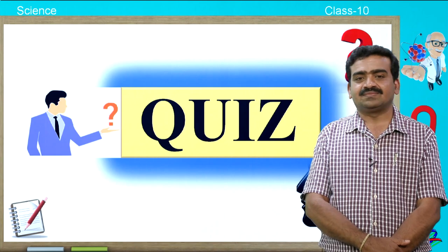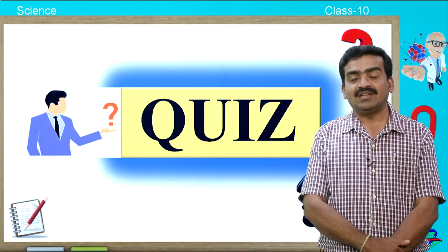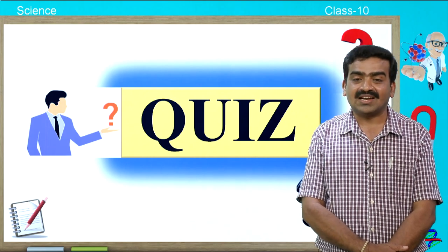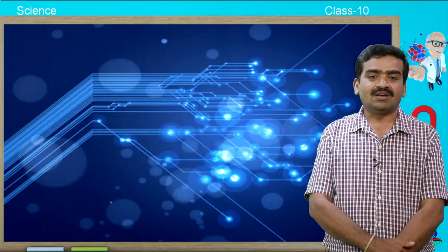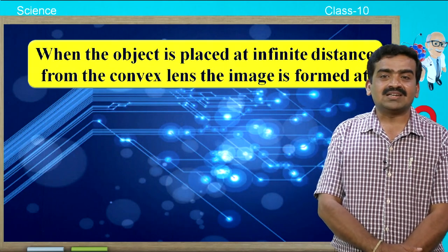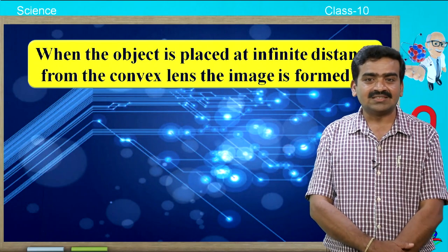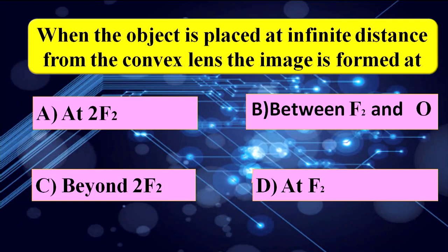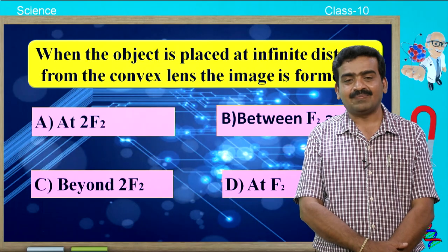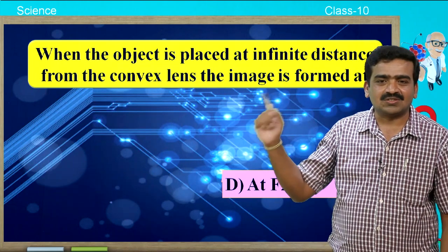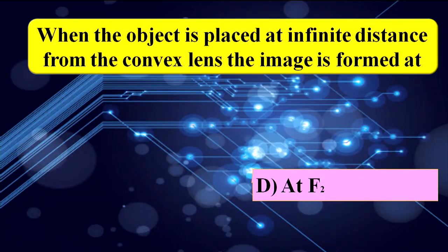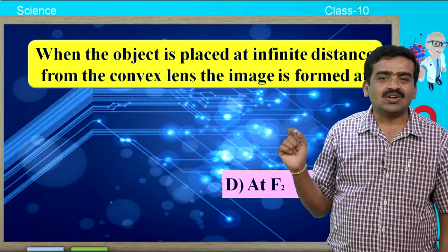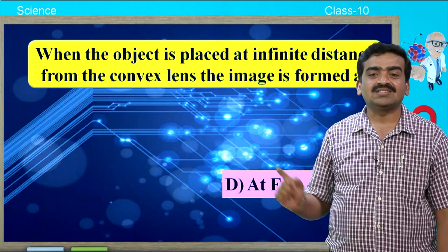My dears, you have a quiz. Read each question and among the four options, choose the right answer. First question: when the object is placed at infinite distance from the convex lens, the image is formed at — a) at 2F2, b) between F2 and O, c) beyond 2F2, d) at F2. The answer is d) at F2, that is at the principal focus.